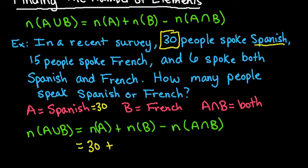Then we would look at the number that speak just French. So our next one is just French. So we have 15 minus the number that speak both. So it says that 6 of them speak both.